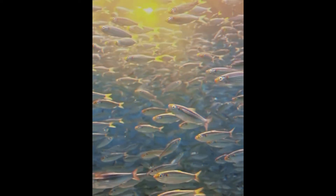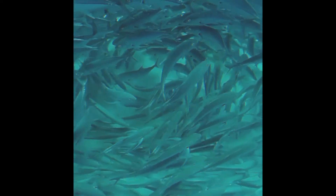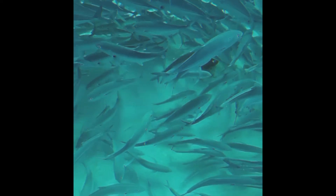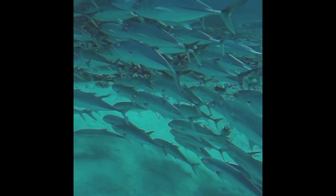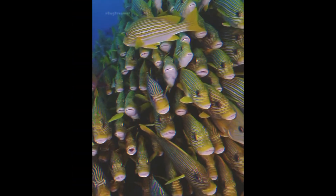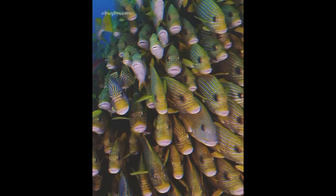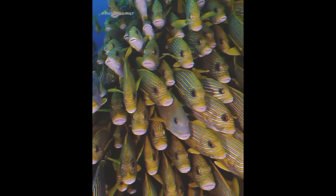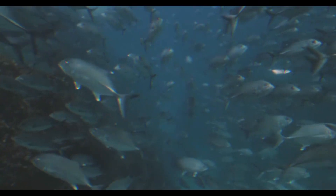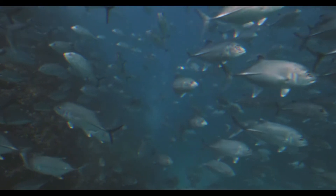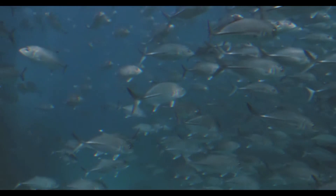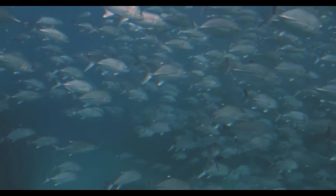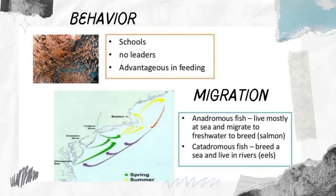Schooling may also facilitate locating food resources. There are different types of schools: spawning aggregations develop for the purpose of reproduction and consist mainly of reproductively mature individuals. Migrating schools form along migration routes and often transition into other types of schools. Feeding schools develop in feeding grounds, primarily due to the concentration of food organisms. Wintering schools originate in the wintering grounds of bony fishes.